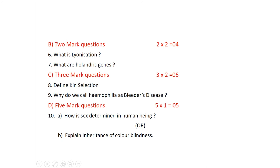What is lyonization? According to Mary Lyon, Barr bodies are nothing but inactivated X chromosomes — they occur as heterochromatin on the inner surface of the nuclear membrane. The number of Barr bodies is always one less than the expected number of X chromosomes. This is what we call lyonization.